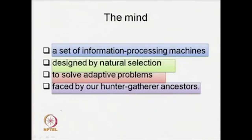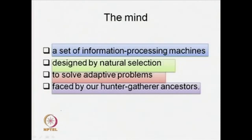If you look at the slide here, the mind within this domain is seen as a set of information processing machines. There is a definite shift here from traditional ways of understanding the mind. For instance, in different religions, the mind is understood certainly not as a set of information processing machines. But if we look at what science, biology, evolution, evolutionary theory, and Darwinian theory has to tell us about the mind — our mind that forms or creates culture — then we have to go to a discourse that tells us that the mind is indeed a set of information processing machines.